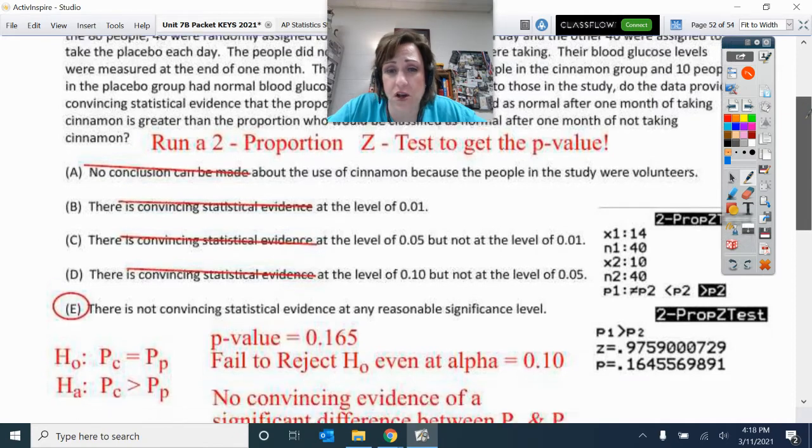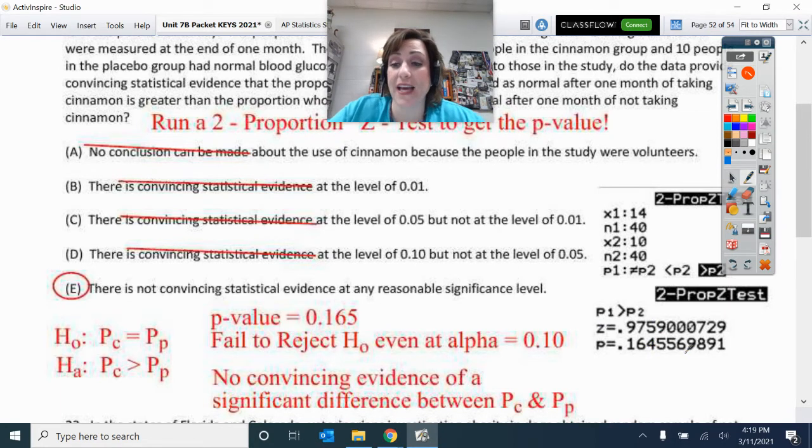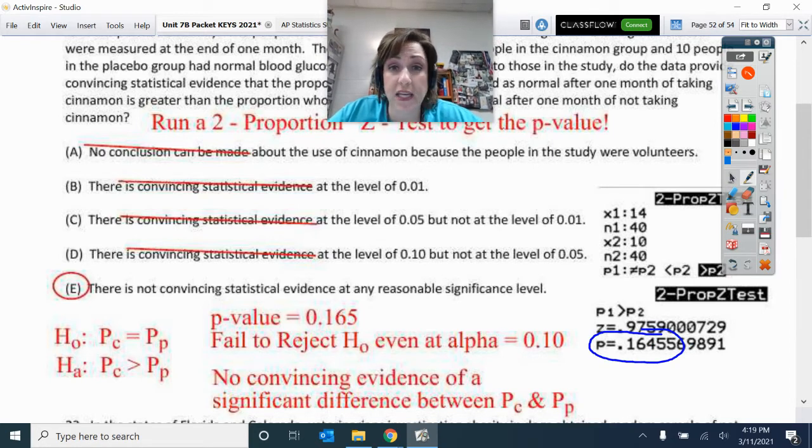They give us all that data and I know I need a p-value because they ask if I have convincing statistical evidence. They give me different significance levels so I can decide what it's significant at, if any. I'm putting in my data - I know my first population is the proportion with cinnamon and the other is the placebo. That gives me a Z score of 0.975 and a p-value of 0.16. That's the major thing we're searching for to make a conclusion.